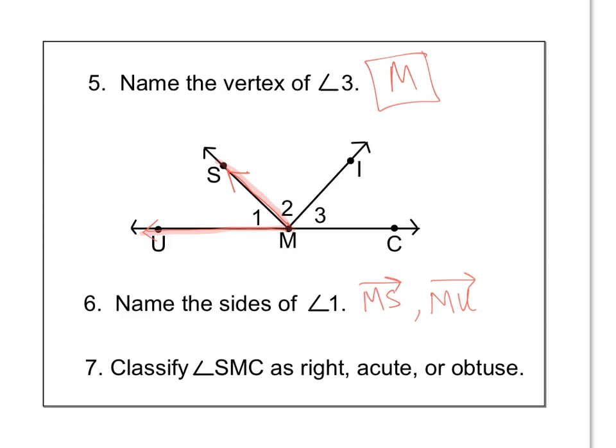Classify angle sm, c as right, acute, or obtuse. So if I erase this stuff here, let's find angle sm, c. So if I trace it, s, m, c, that is this angle right here. To me, that looks like it's greater than 90 degrees, so obtuse.